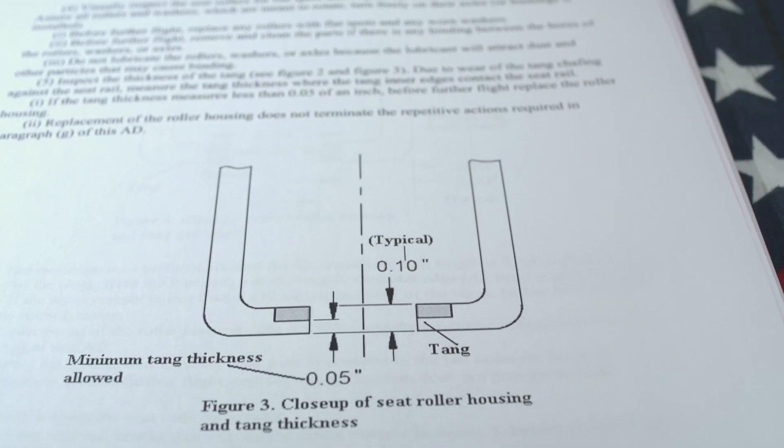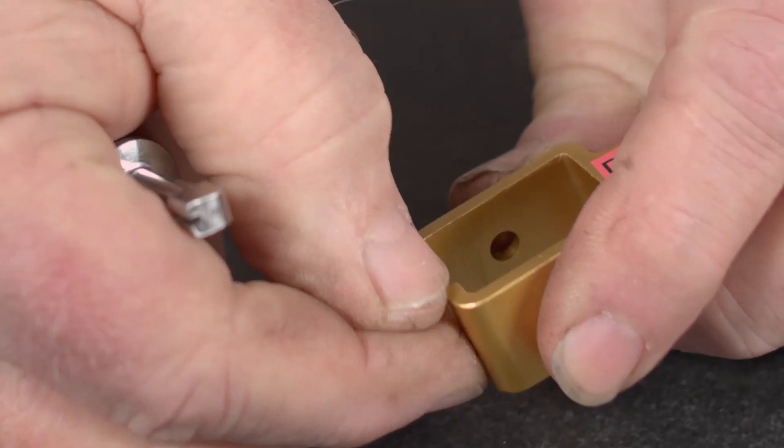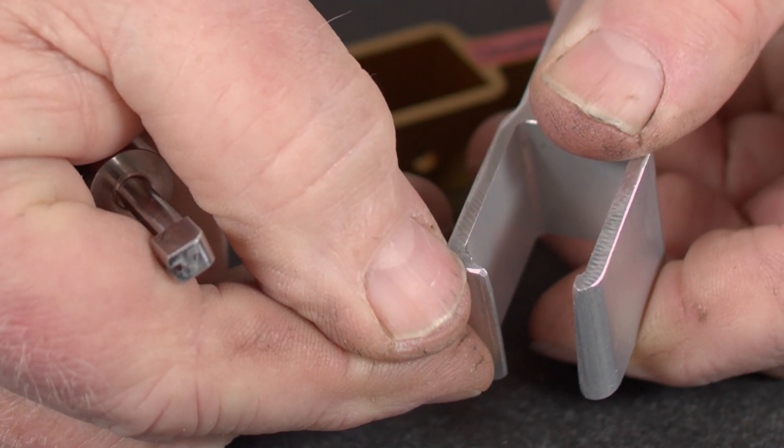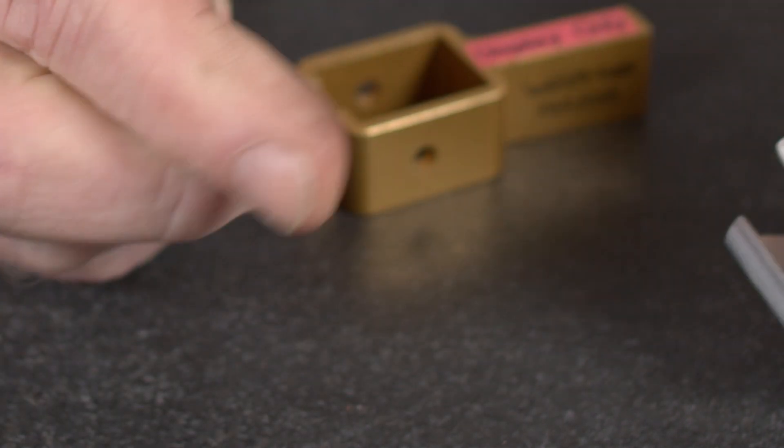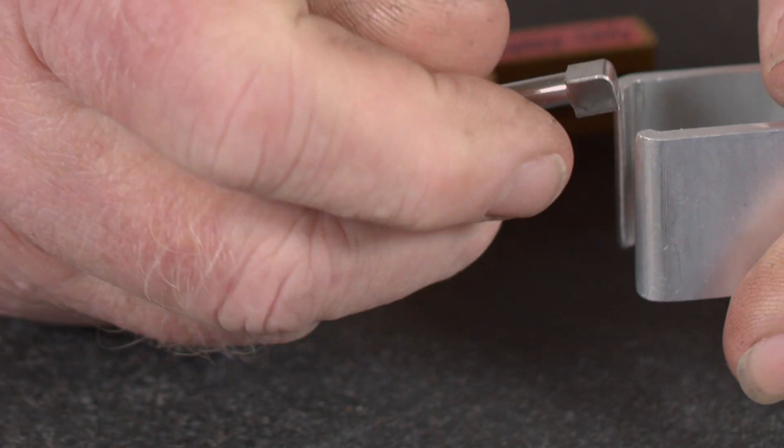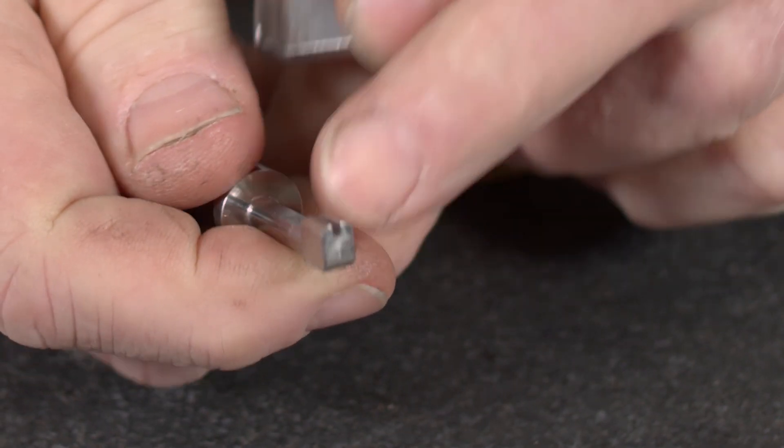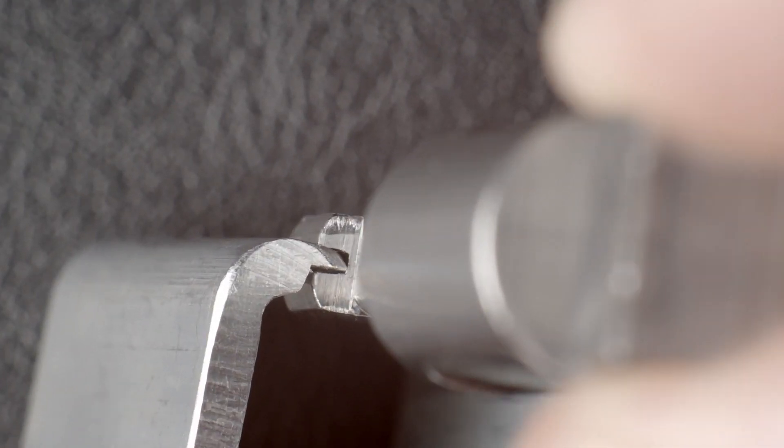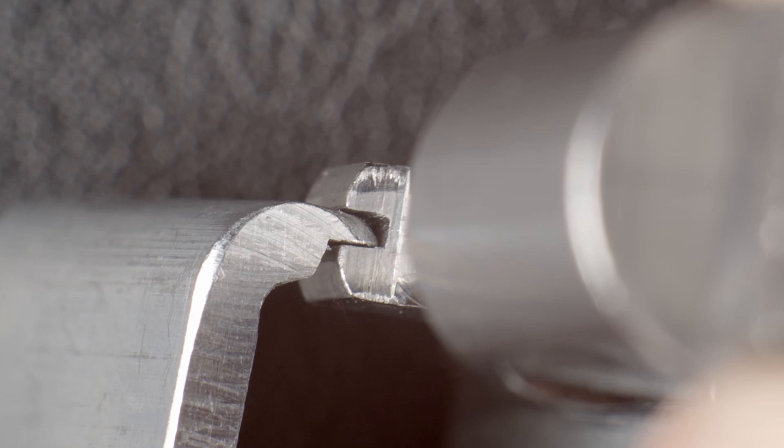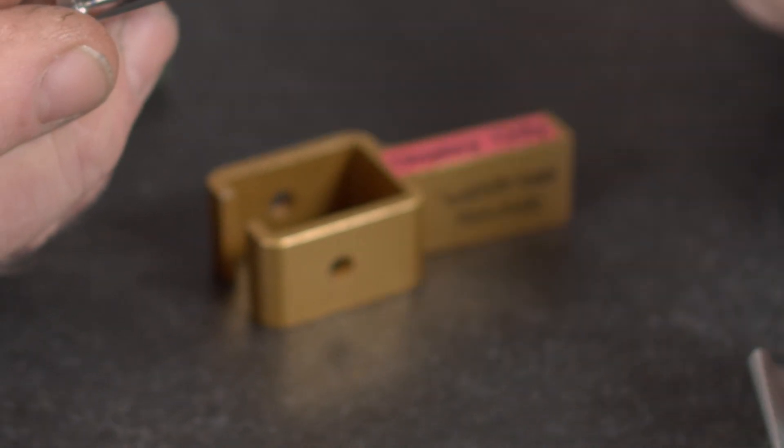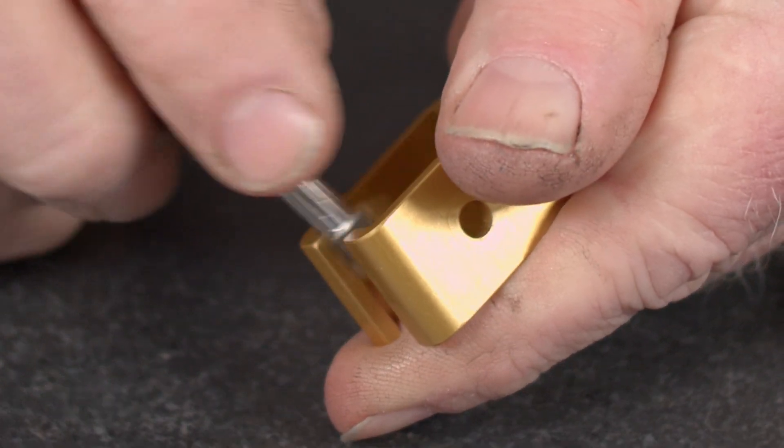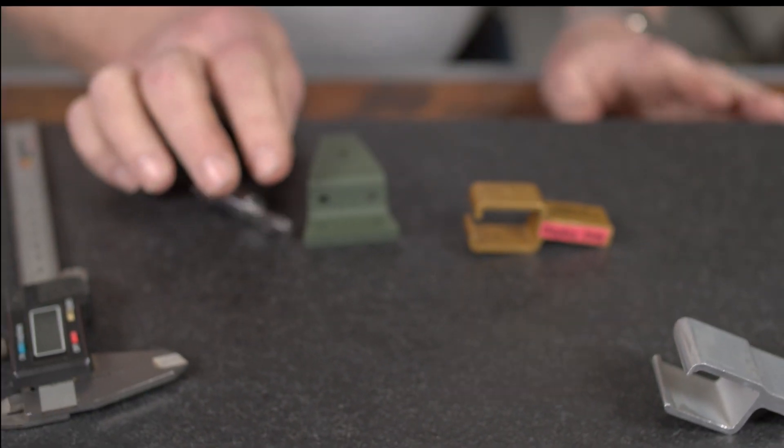The last thing to measure is the wear on the tang here and here. You notice how we have an example of a tang that's worn down and no longer meets spec. We have this slot at 50 thousandths and it readily slides into place here so that's a non-conforming part. We have a new part and it will not fit so we know that this is an airworthy part.